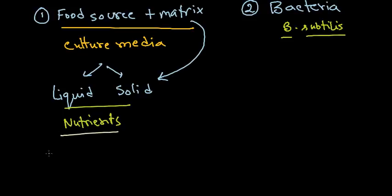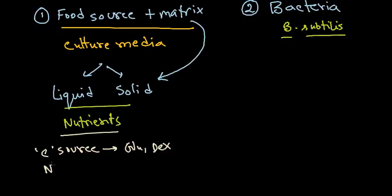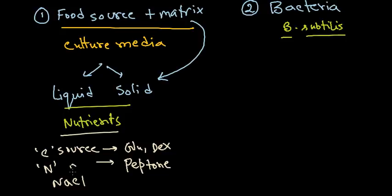A basic media should contain a carbon source — this is also the energy source — which can be dextrose or glucose. There should also be a nitrogen source, which provides proteinaceous components. We also use NaCl because salts are necessary for the growth of bacteria.